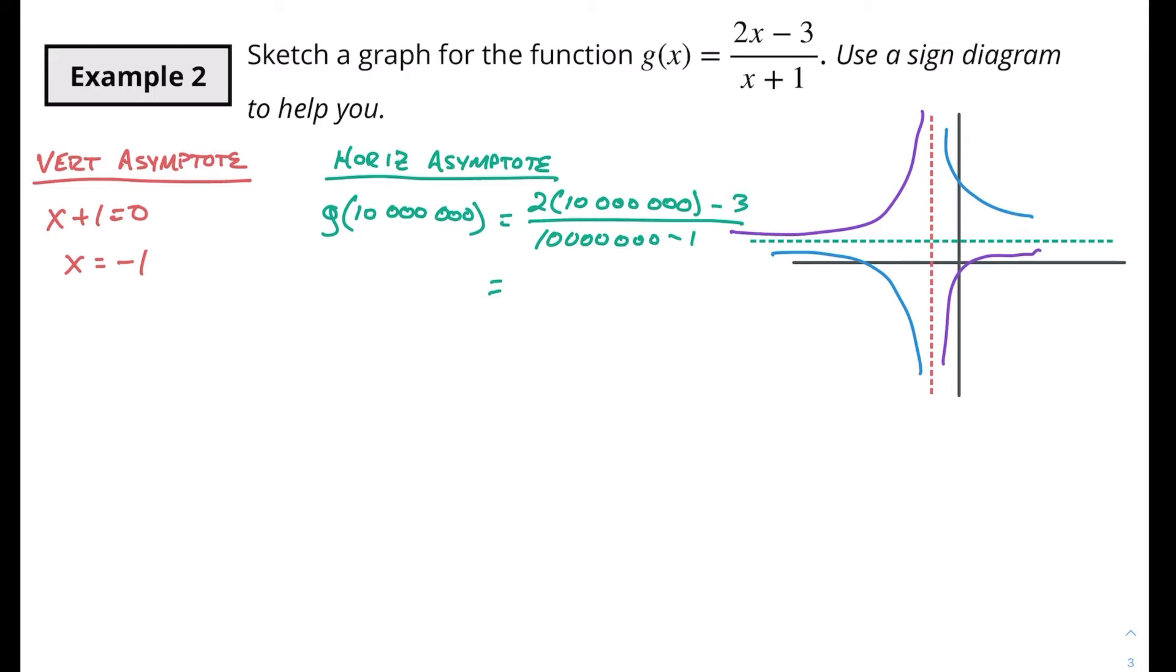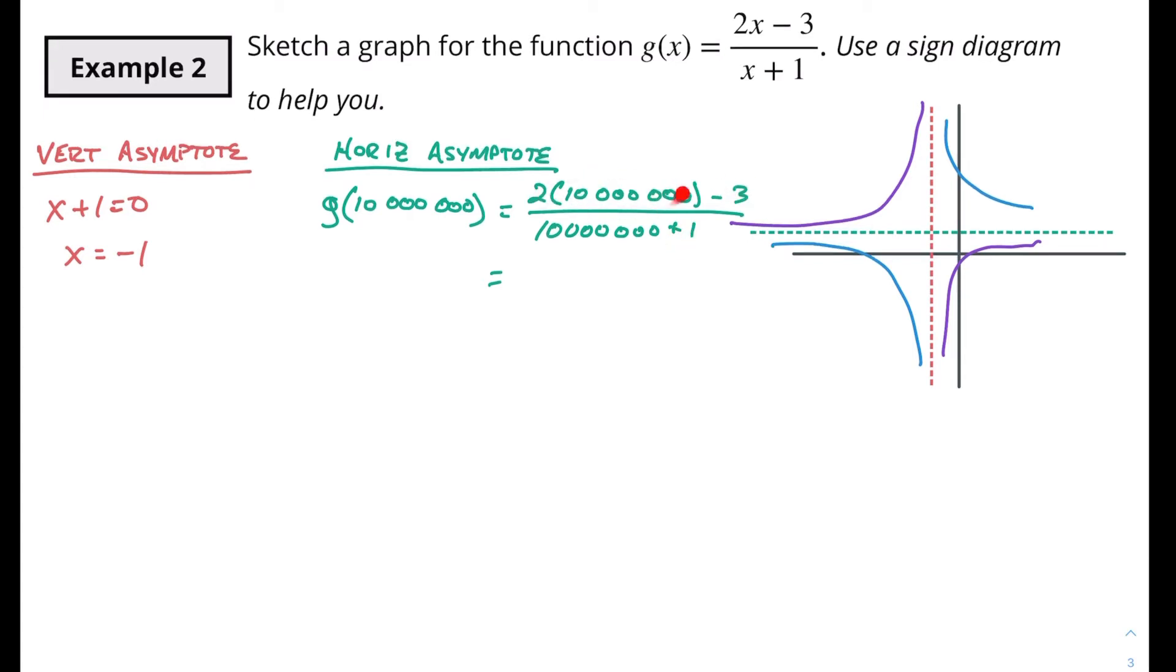But we're gonna have 2 times 10 million over 10 million roughly and so we're roughly gonna get to a value of 2. And if these things are fairly insignificant and I simplify out these values here then I see that I'm gonna simplify to approximately 2.